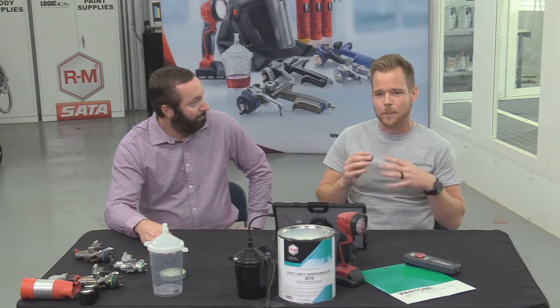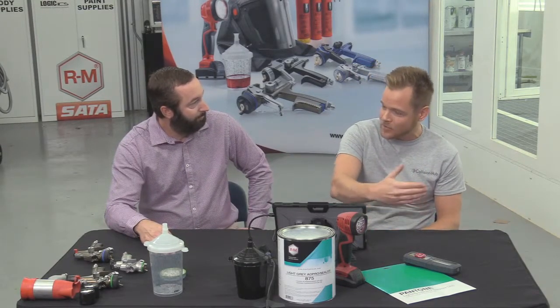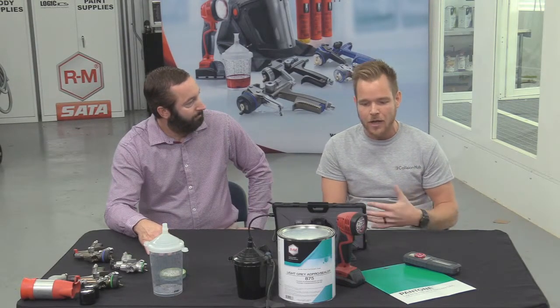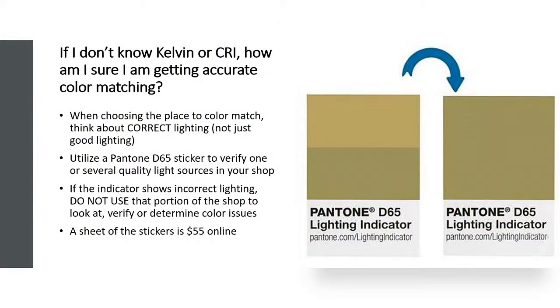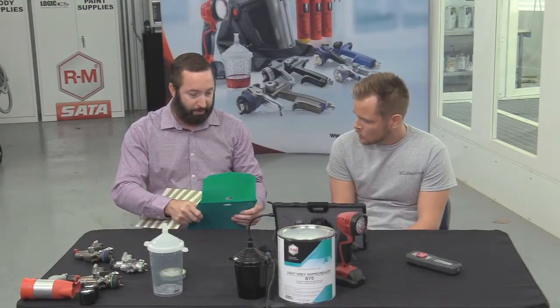Sometimes we think we have good shop lighting, and color looks great inside — then we take the car outside and it's night and day. We need a measurable, repeatable way to verify our lighting. The tool for this is called the Pantone D65 Lighting Indicator. Chris is well-versed on these D65s — can you explain how they work and what the painter is looking for?